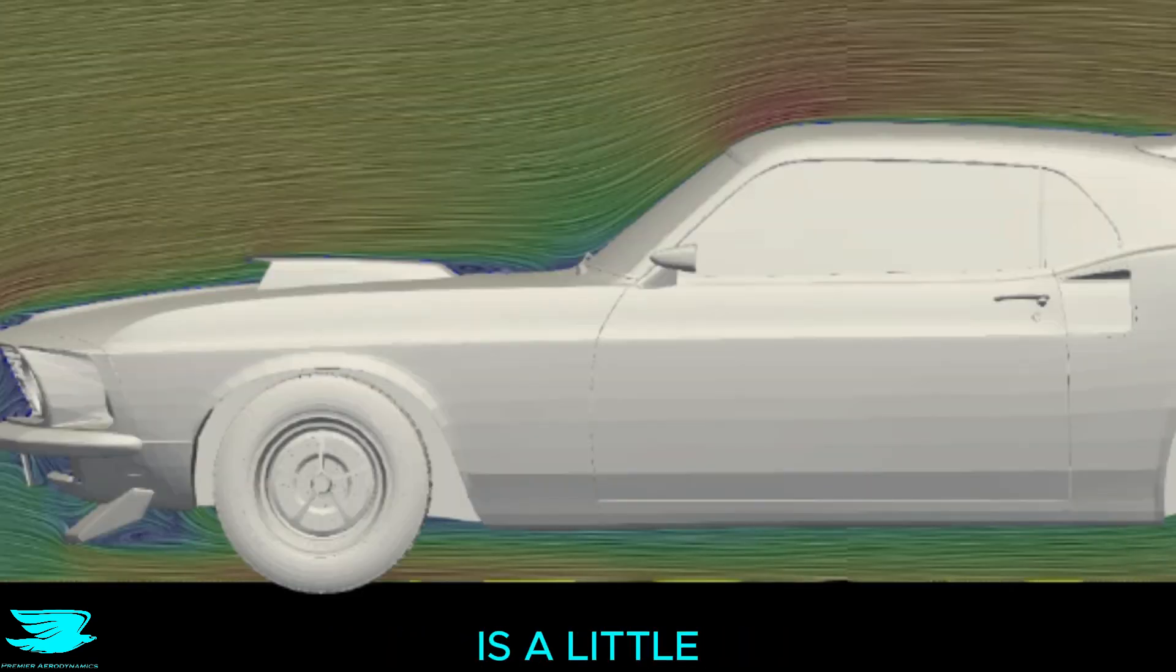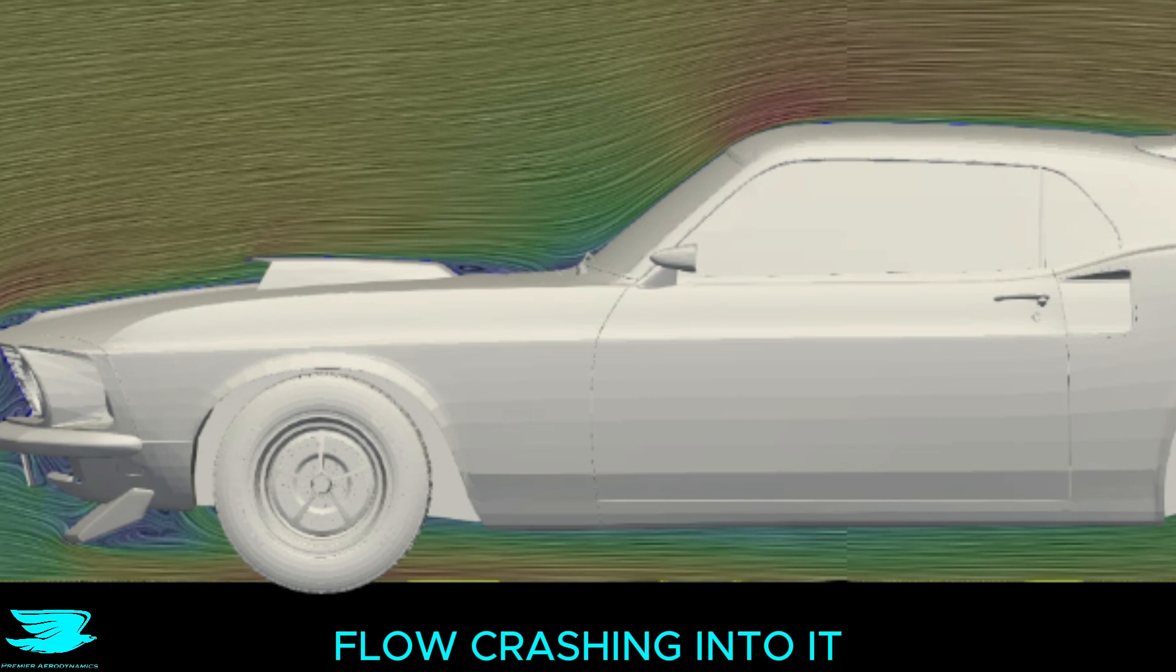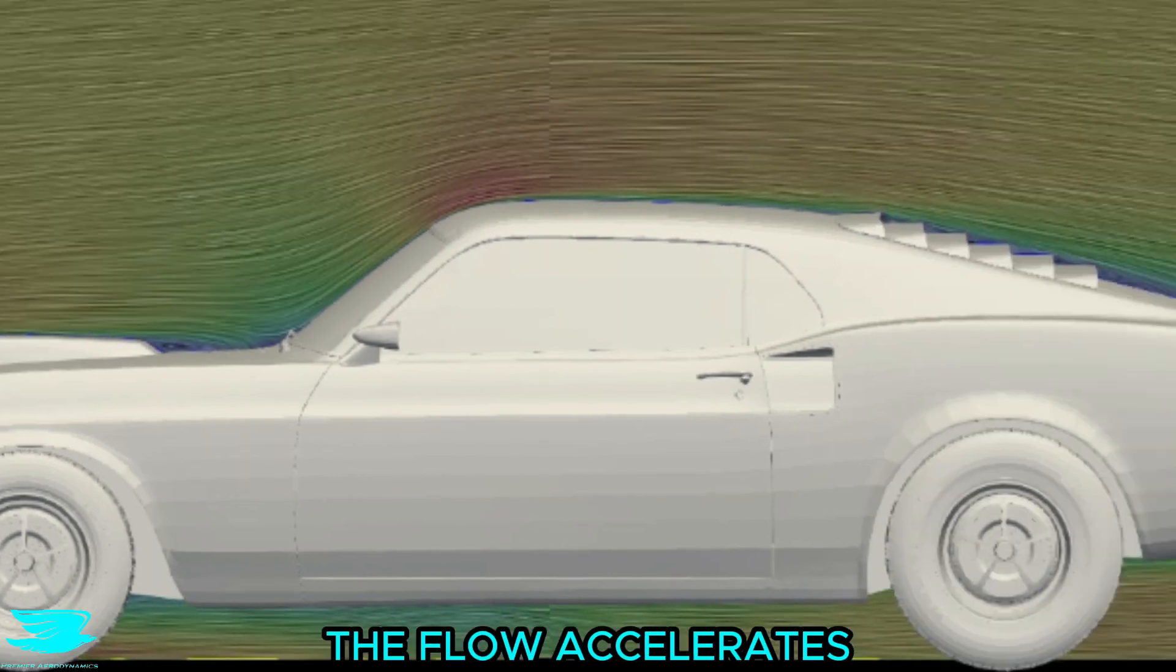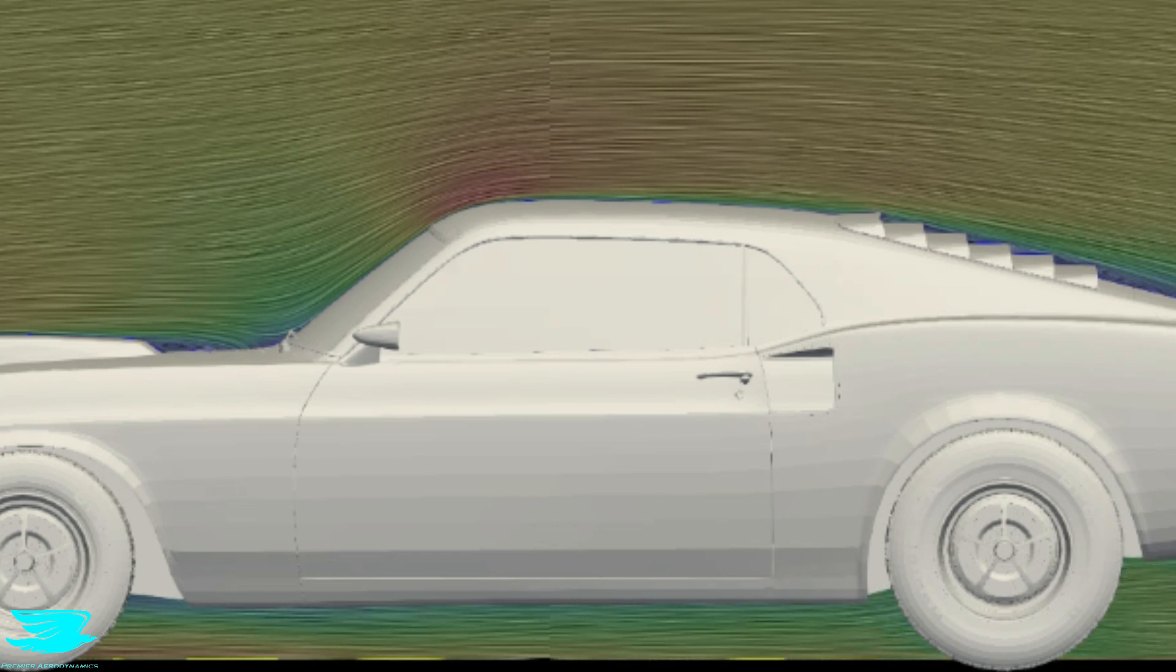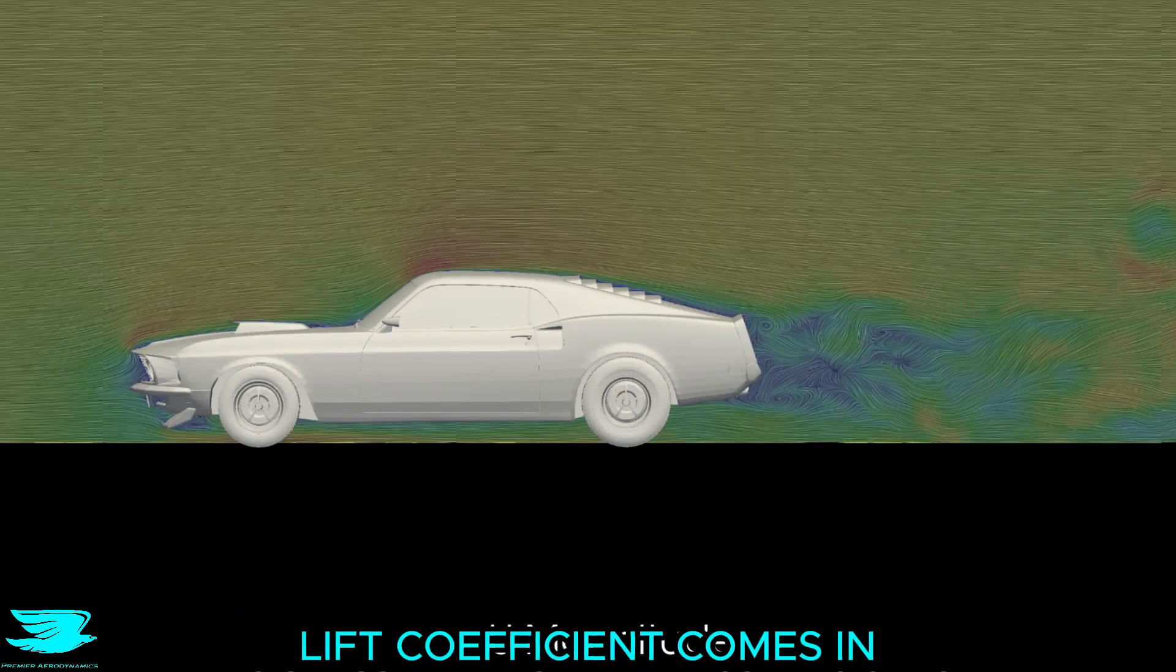The front window is a little too upright though, which results in a lot of flow crashing into it and increasing the drag. The flow accelerates over the top of the roof, which increases the lift of the car, which isn't desirable, which is why the lift coefficient comes in at 0.075.